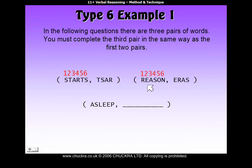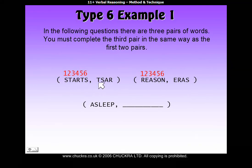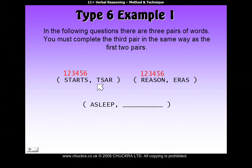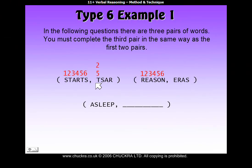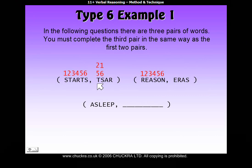We'll do the same with 'reason'. Now let's look at 'tsar'. Where do these letters come from within 'starts'? The T can either be from position 2 or position 5. The S can either be from position 1 or position 6. A — there's only one A — so it must be position 3. And R — only one R — position 4.